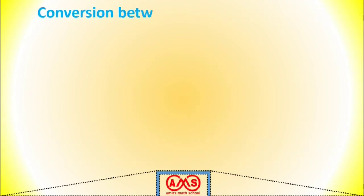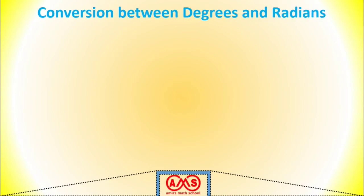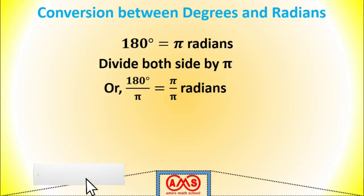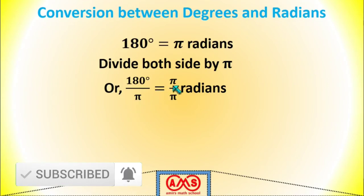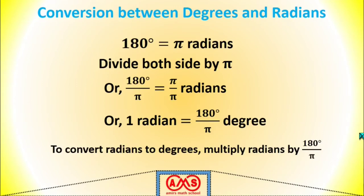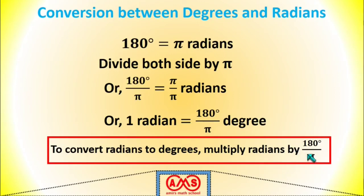Let's simplify it for radians. We know 180 degrees equal to π radians. Divide this equation by π on both sides. We will get 180 degrees divided by π equal to 1 radian. So 1 radian is equal to 180 degrees divided by π. This is the conversion rule: to convert radians to degrees, multiply the radian value by 180/π.